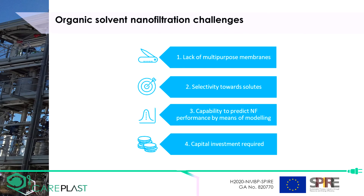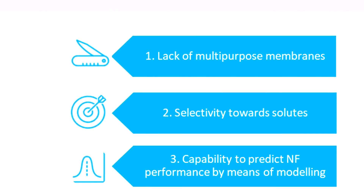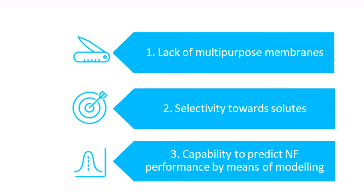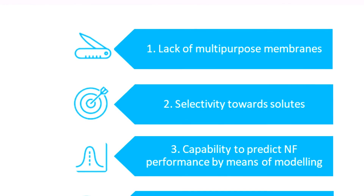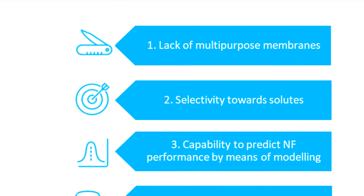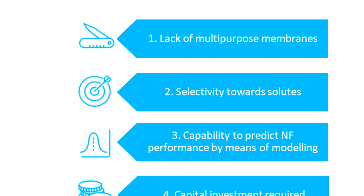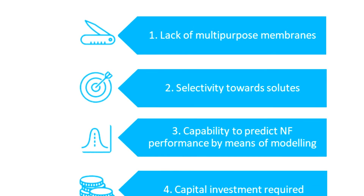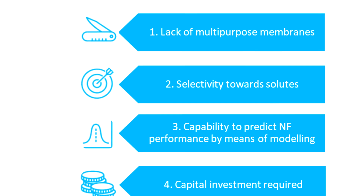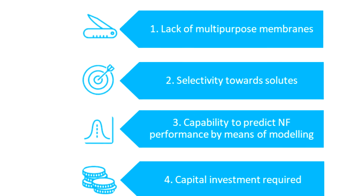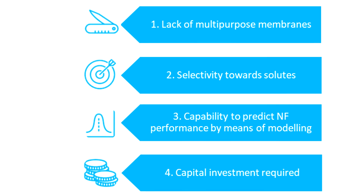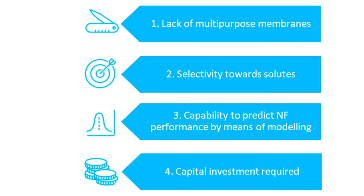The main issues related to the development of membrane processes for organic solvent nanofiltration are: the lack of multipurpose membranes, as membranes often have to be highly specific to one type of separation; the selectivity towards solutes, especially at similar molecular size and in the case of mixtures of isomers; the capability to describe or predict nanofiltration performance by means of modeling; and the amount of capital investment required to build novel OSN facilities.